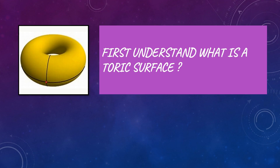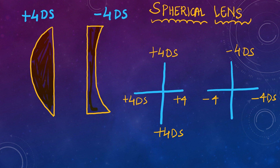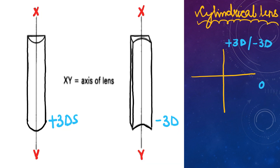Before we jump to toric transposition, it is first very important to understand what is meant by a toric surface. We all know that a spherical lens is basically cut out from a sphere and has equal power in all the meridians. A cylindrical lens is formed in such a way that power is only present in one meridian, and the other meridian does not have any power — that meridian is called the axis of that cylindrical lens.